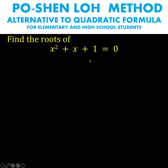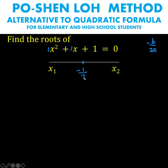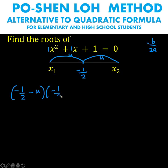Let's solve another quadratic equation using the Po Shen Lo method. First, visualize x sub 1 and x sub 2, then identify the midpoint equal to negative b over 2a. With a leading coefficient of 1, just take the opposite sign of the middle coefficient and divide by 2: the midpoint is negative 1 half. Then, using the midpoint, set up the equation: negative 1 half minus u times negative 1 half plus u equals c over a, which is 1.